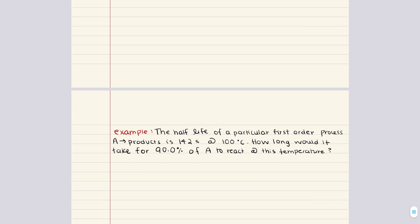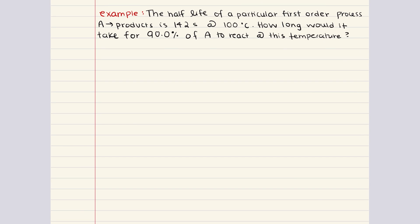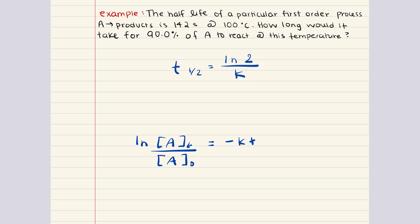Let's tackle one more. This problem says: the half-life of a particular first-order process is 142 seconds at 100°C. How long would it take for 90% of A to react at this temperature? A key phrase in many kinetics problems is 'how long?' — whenever you see this, you must use an integrated rate law. In this problem, we're given the half-life rather than the rate constant, so we'll begin by using the first-order half-life equation to determine k, then use the integrated rate law to find the time.